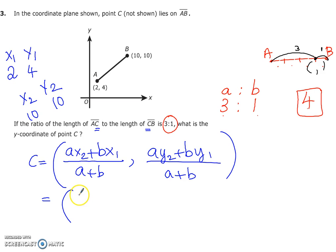So A X2 will be 3 times 10, which is X2. 3 times 10 is 30 plus B X1 will be, B is 1 and X1 is 2. So 1 times 2 is 2. Over A plus B, A and B are 3 and 1. So 3 plus 1, the total is 4.